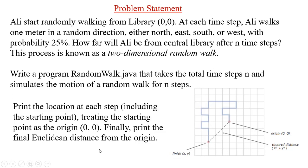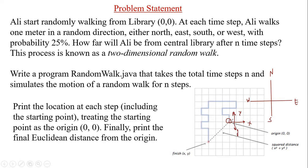Now let's understand how the problem is dissected. Looking at the map, the four directions are: the person can move north, south, east, or west. We assume this is the origin — the central library. Moving north corresponds to the positive y-axis on the graph, and moving east corresponds to the positive x-axis.